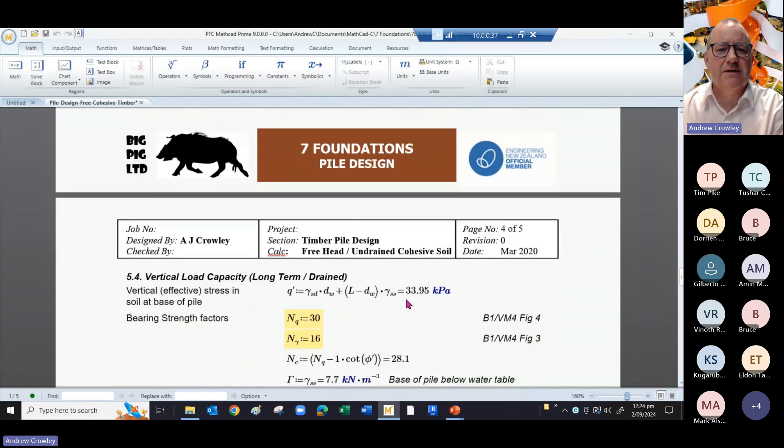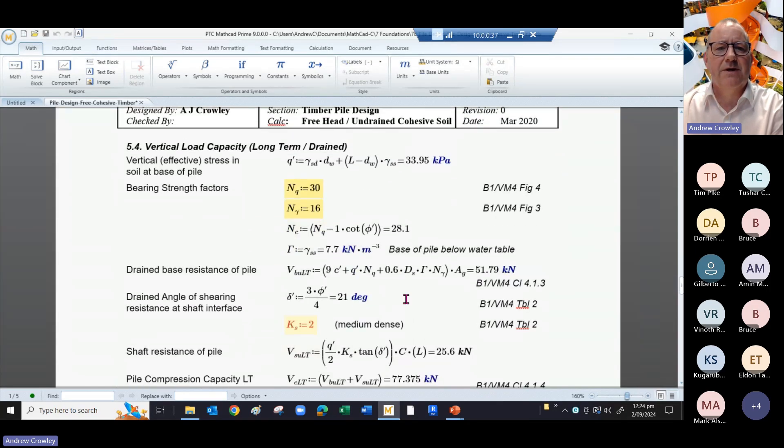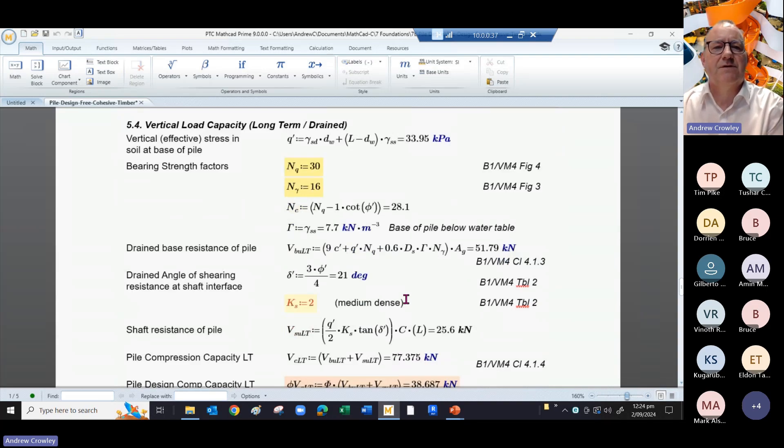Let's have a look at the long term. So long term, looking at drained and effective stress parameters, we work out what the effective vertical stress is. Q dash is 33.95 kPa.